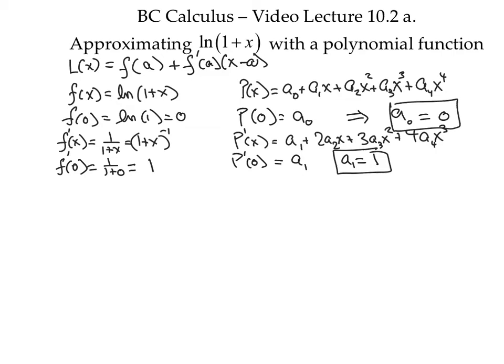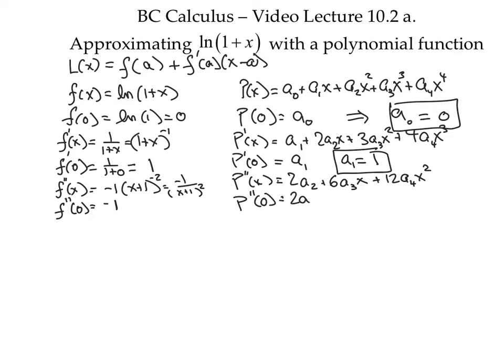Proceeding on to the next derivative. Now again, we want the second derivatives to match at our center, which is 0. So we need that f double prime of 0, which is negative 1, must equal p double prime of 0, which is 2a2. So our conclusion is that 2a2 is equal to negative 1, or a2 is negative 1 half.